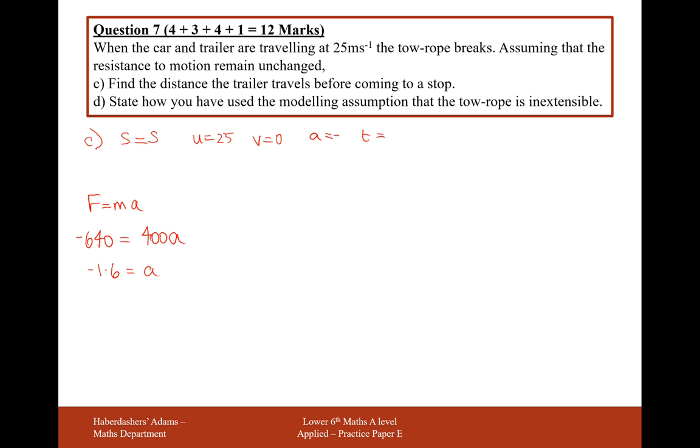So what we can do now is use that minus 1.6 as our value for a. And now we need a formula that connects all of these three values together. I think what we need here is v squared equals u squared plus 2as. v is 0, u squared is 25 squared, so 625.